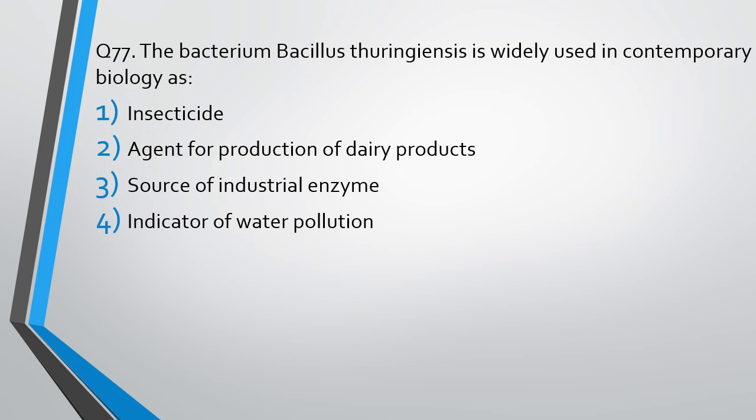Question number 77: The bacterium Bacillus thuringiensis is widely used in contemporary biology as — insecticide, agent for production of dairy products, source of industrial enzyme, or indicator of water pollution. The correct answer is option 1 — it is used as an insecticide.